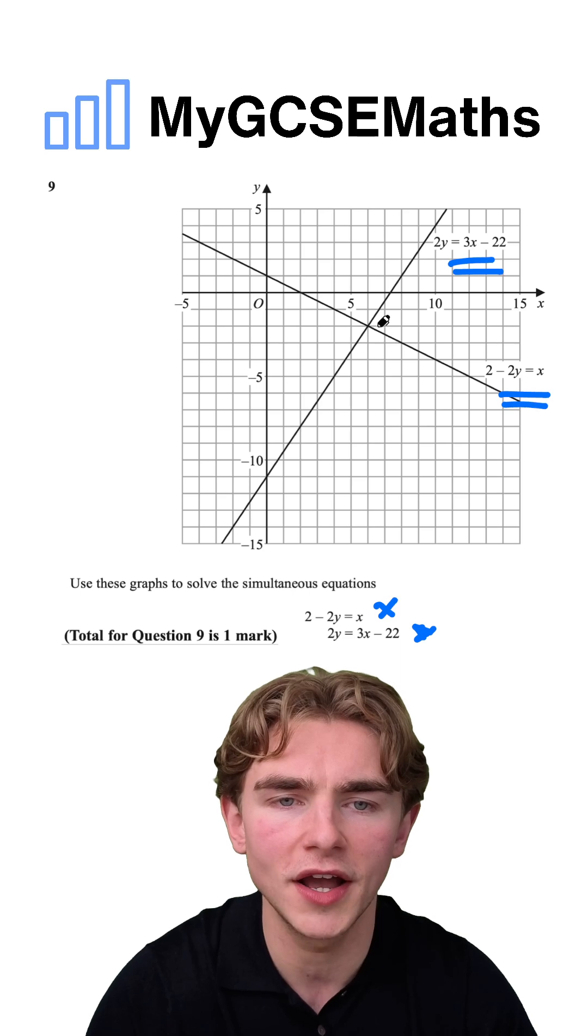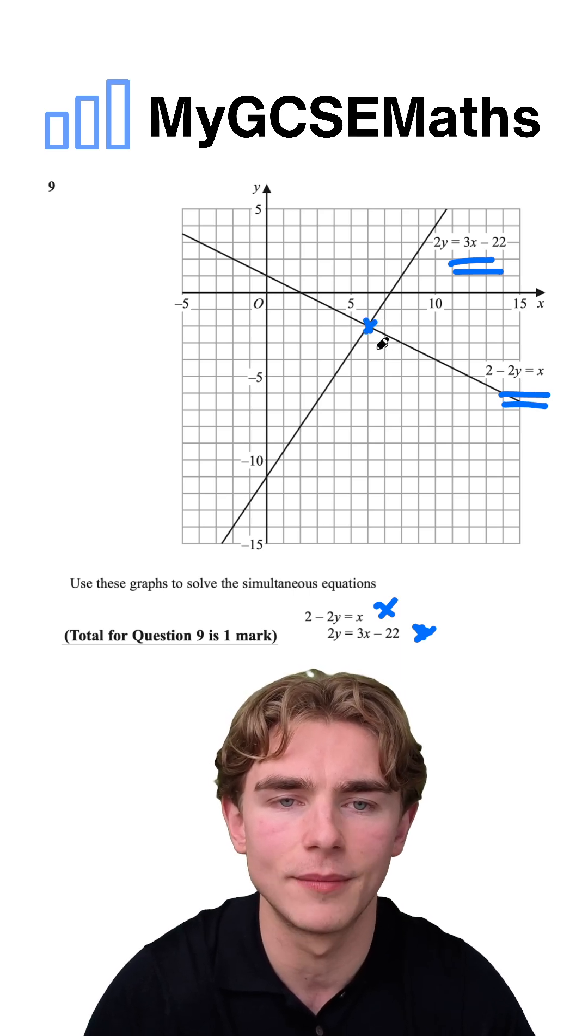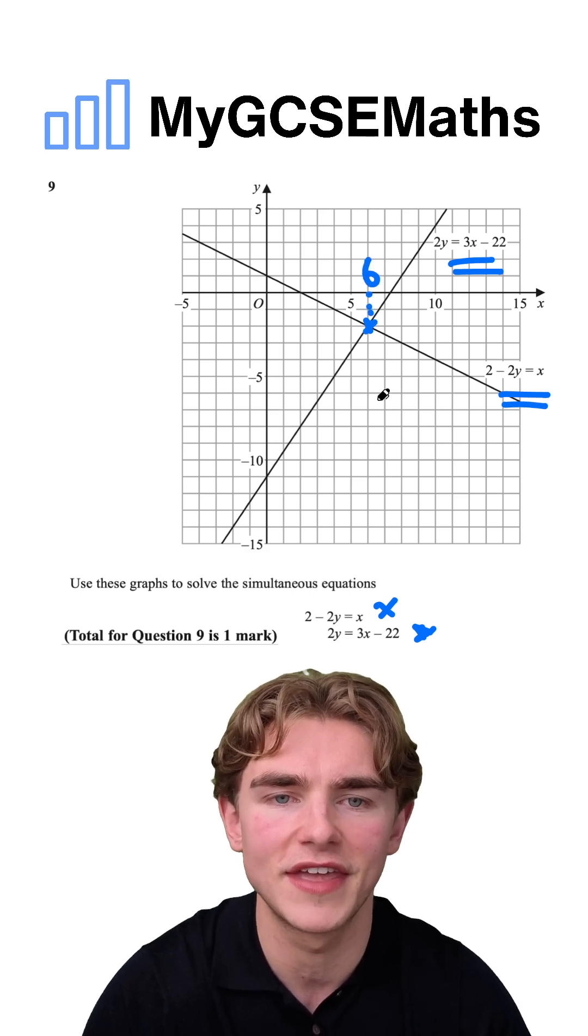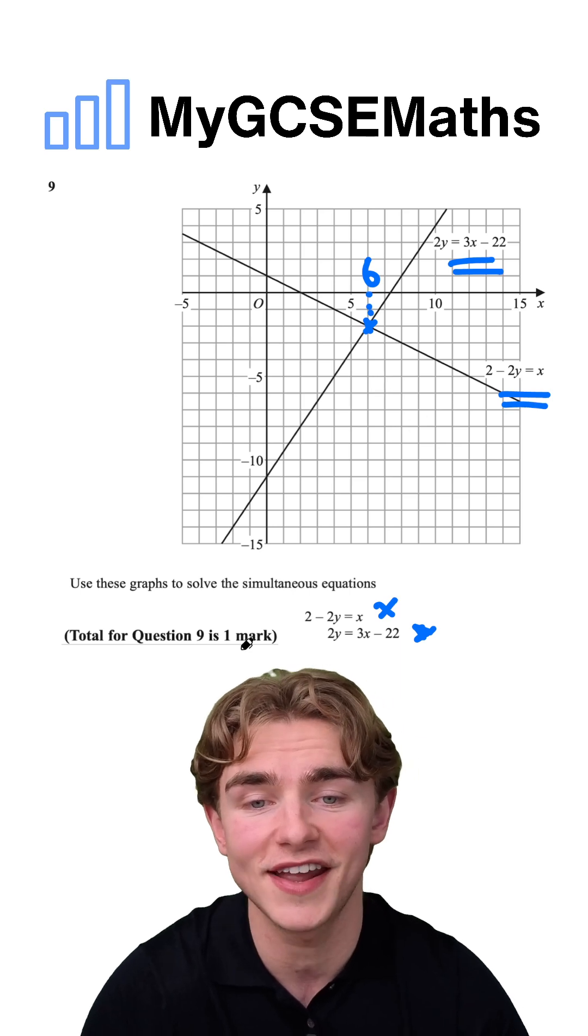So we're going to look at where these two lines meet each other. We can see that it's right about here. If we go up to our x-axis, that's going to be 6 on the x-axis, so the x-coordinate is going to be 6.